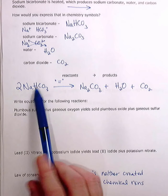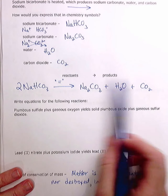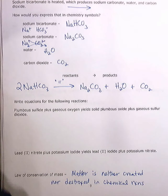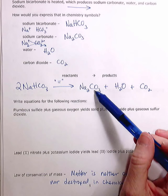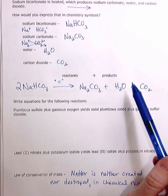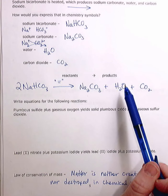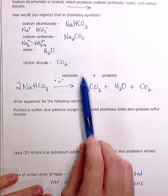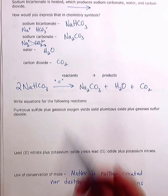Another important point: many students see the sentence describing a reaction and think the products always have to be written in the same order. That is not the case. You could have carbon dioxide written first, then sodium carbonate, then water — it doesn't matter what order you have the products in. The most important thing is that these chemicals are on the right side of the arrow. If they were on the left side, it would be incorrect.